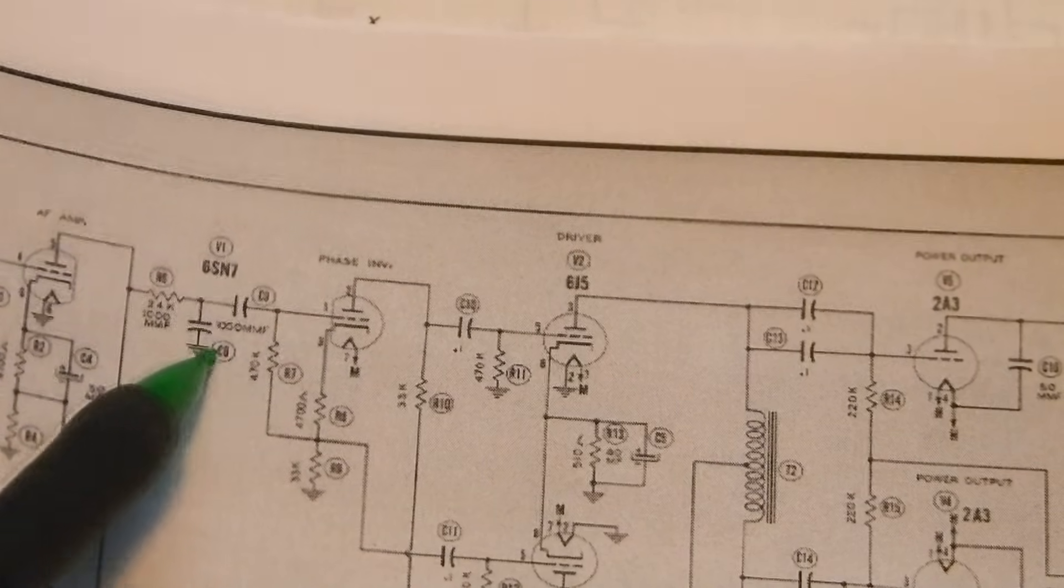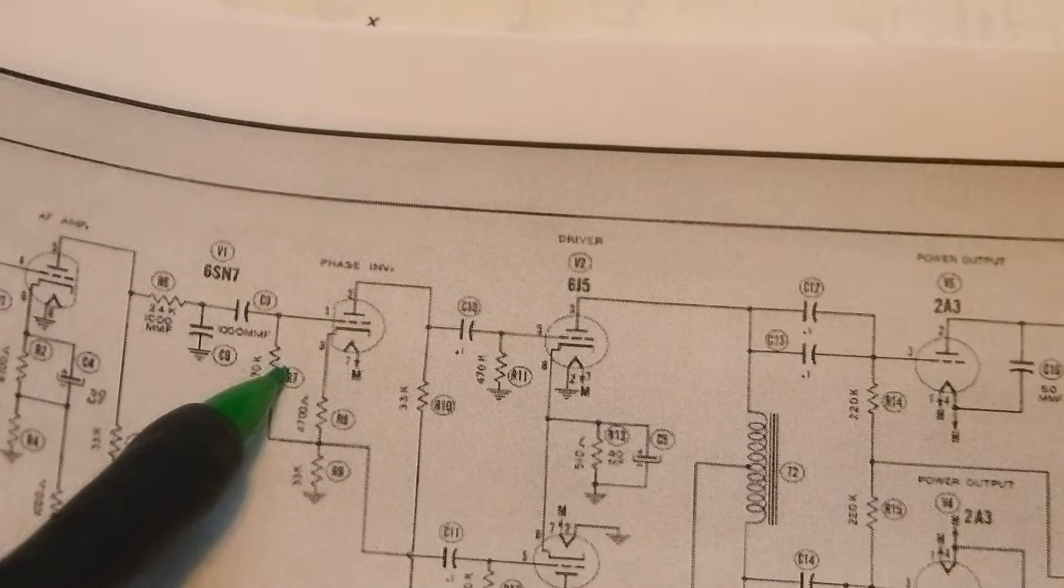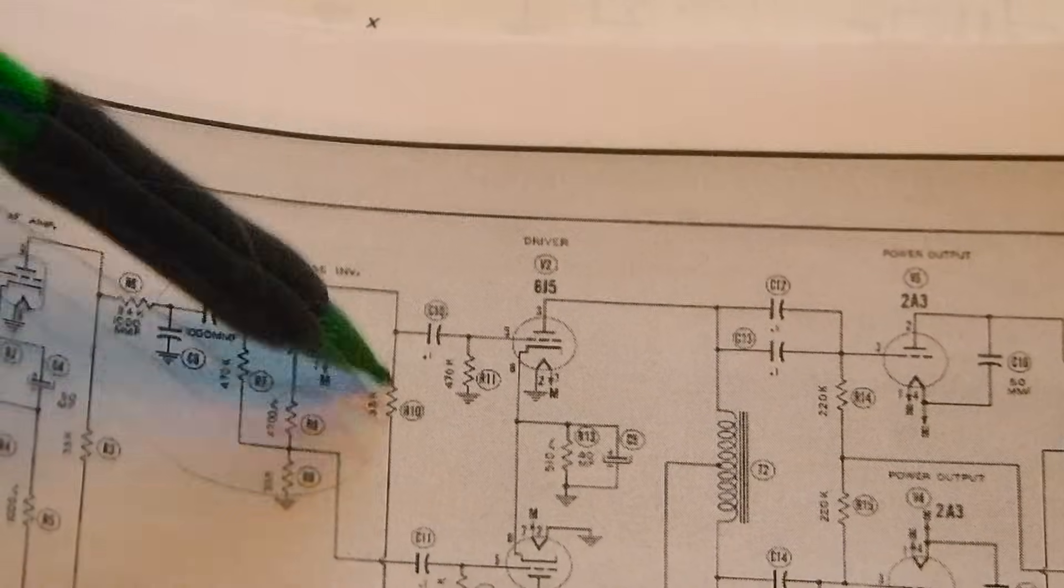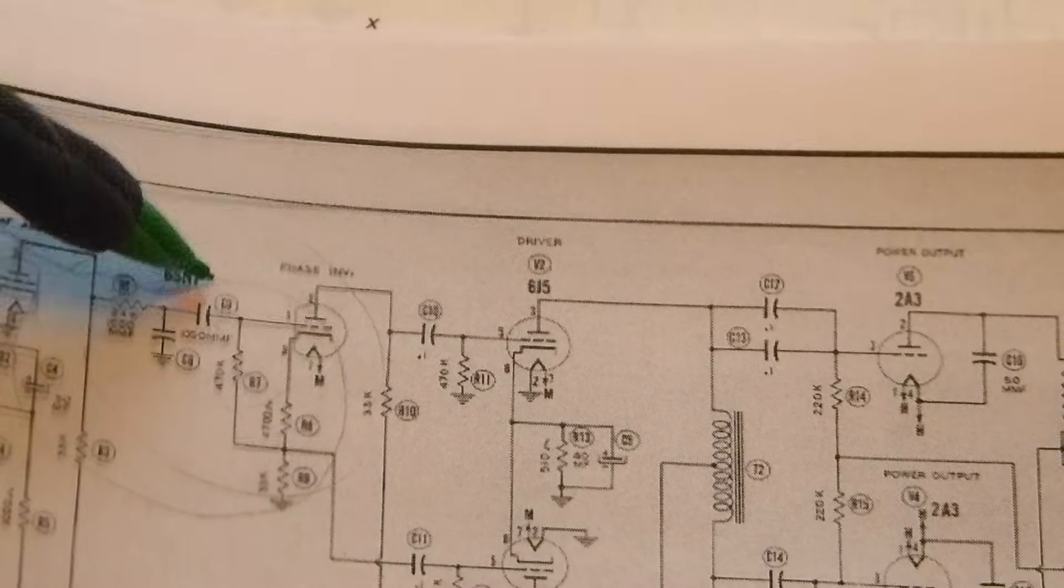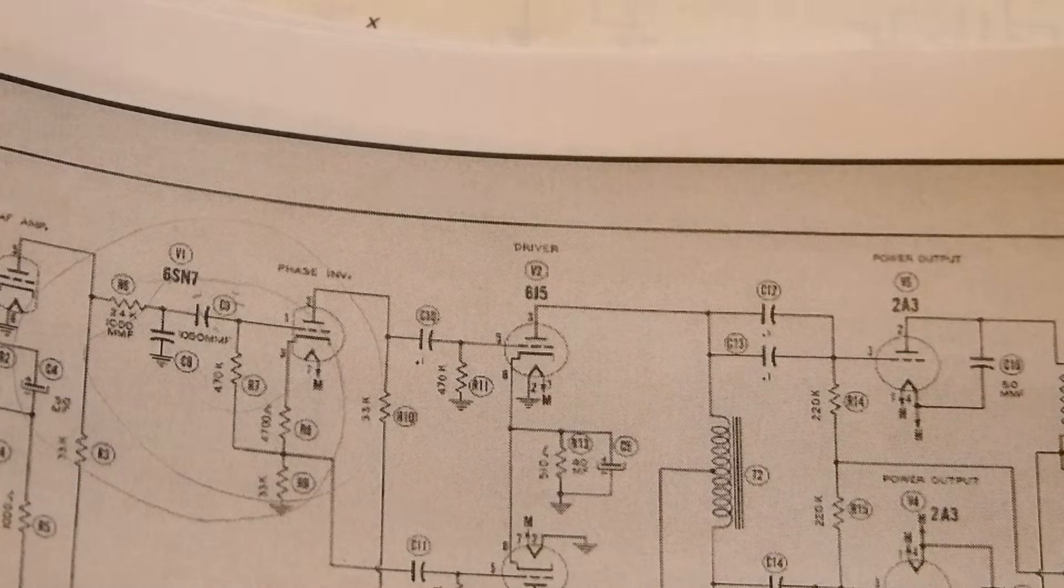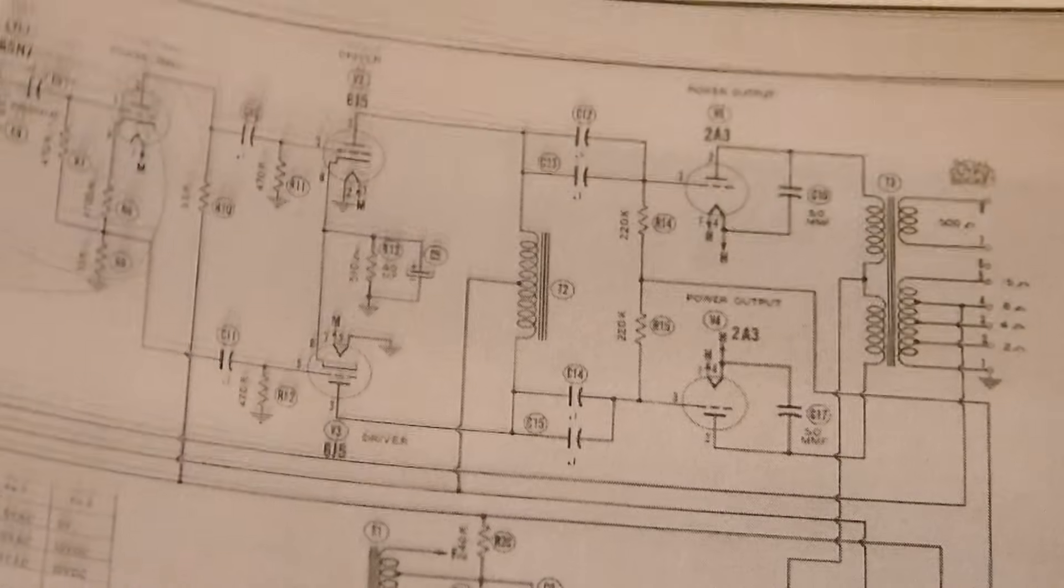Then they go through a 0.001 to a 470k. I've already simulated all this, I'm going to show you the simulation. So they're doing some serious frequency contouring right there. This is called a Brooks 12A, some really vintage stuff.